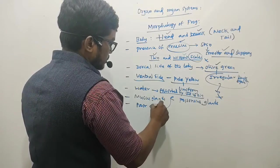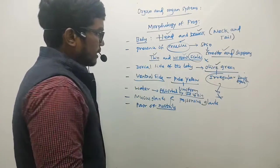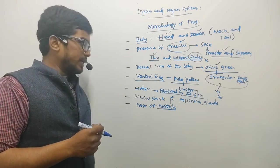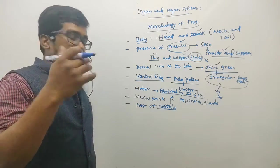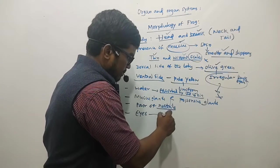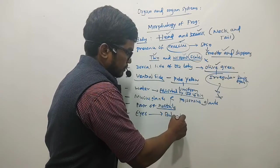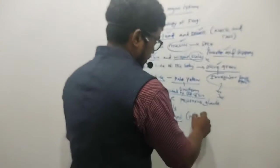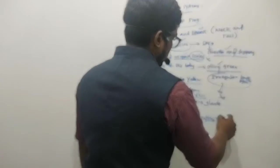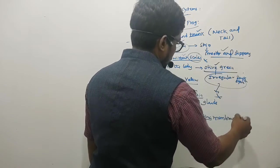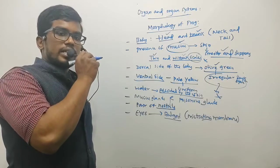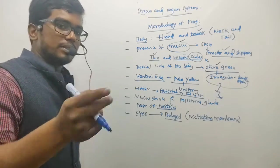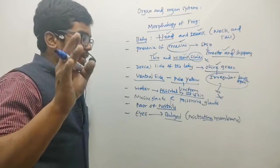A pair of nostrils helps in the respiration process. The eyes of the frog are bulged, and these eyes also have the nictitating membrane. The nictitating membrane covering the bulged eyes helps to protect them, especially during the winter season.